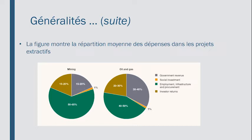In this figure, you will see how we have divided, on average, the expenses of extractive projects. For the mining sector, on the left, it is about 15% to 20% that goes to the government as revenues, 1% for social investments, which is quite marginal. In terms of employment, infrastructure and local provision, it is about 50% to 65% that countries can take out of mining projects. And at least 15% to 20% returns as profit to the investor.